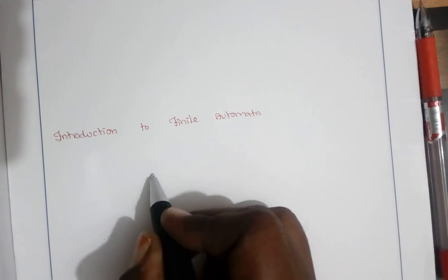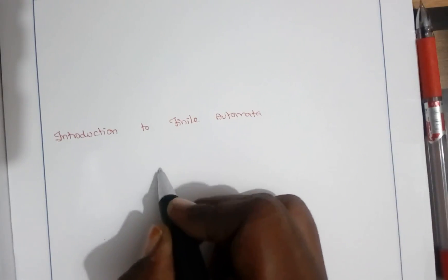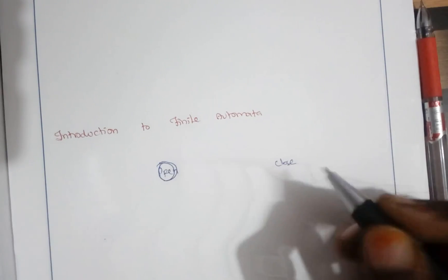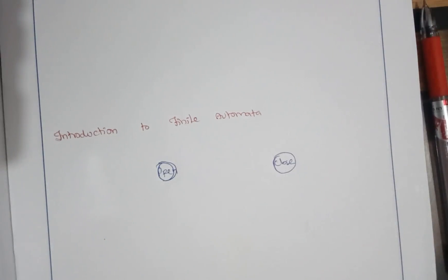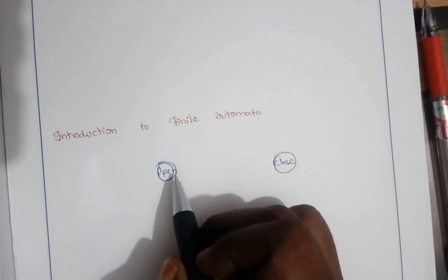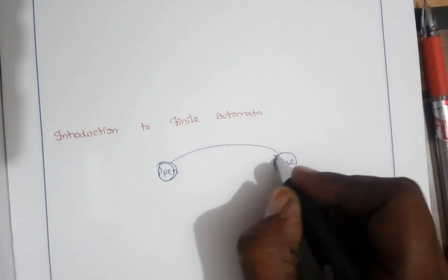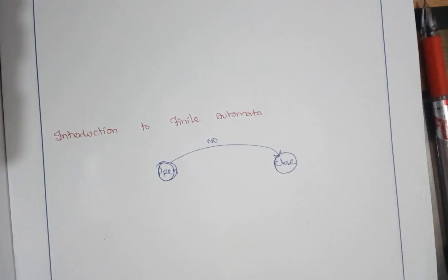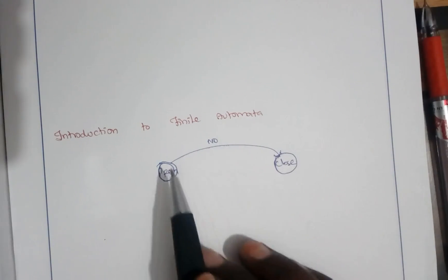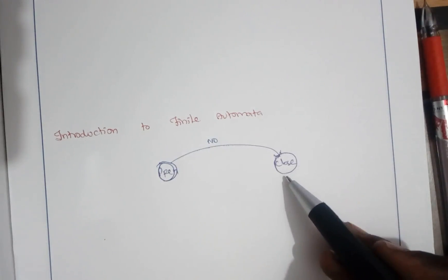We can represent this using a transition diagram. There are two states — open and closed. The door either remains in an open state or in a closed state. When the door is in the open state and nobody is there, it should automatically go to a closed state. This movement from a state, on an input, to the next state is called a transition. Open, when nobody is standing, goes to closed state.